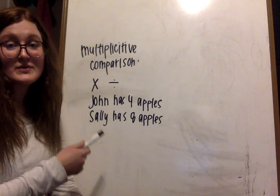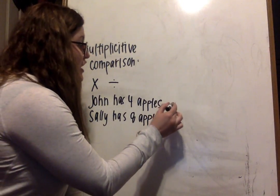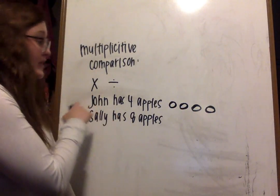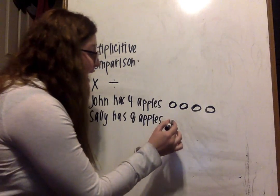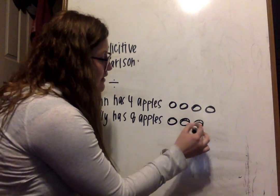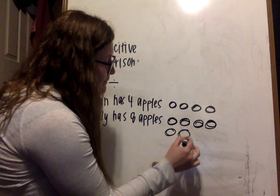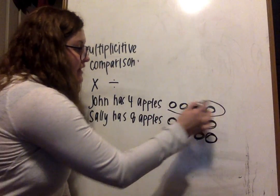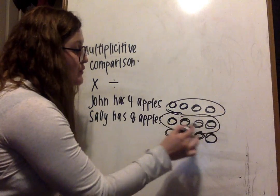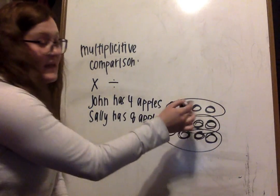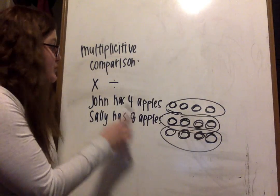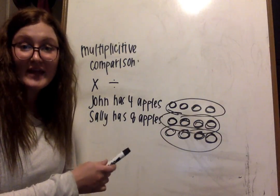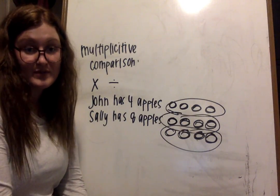Comparing those using multiplicative comparison, John has four apples and Sally has eight apples. So Sally has two times as many apples as John. Because we're not doing addition or subtraction, you would say 'times as many' — Sally has two times as many apples as John has.